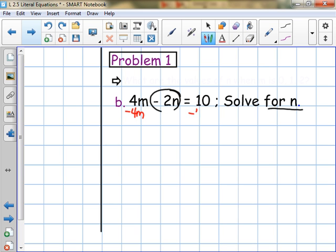So, 4m is being added or subtracted with the 2n, so I'm going to get rid of the 4m by subtracting it. What I do on one side of an equation, I do on the other side. 4m minus 4m is 0, it cancels and goes away, and I'm left with negative 2n. On the right-hand side of the equation, 10 minus 4m. Well, those are not like terms, so all I can do is rewrite it: 10 minus 4m.